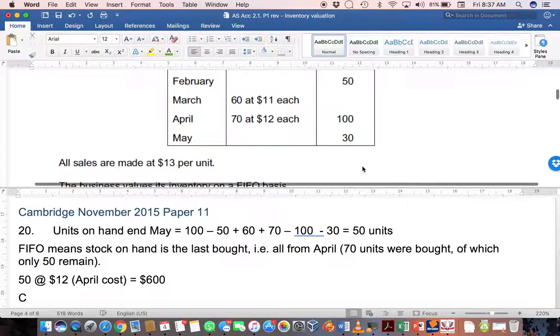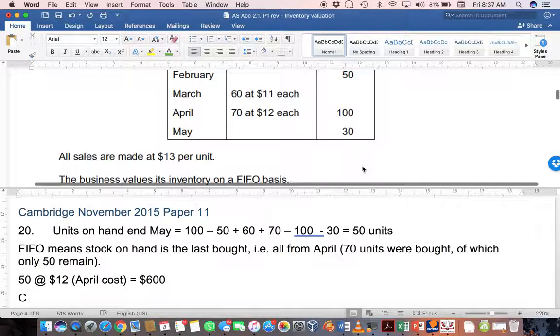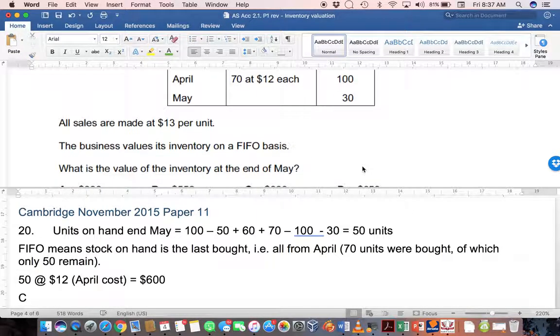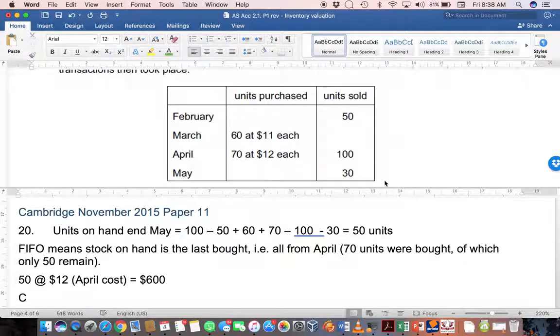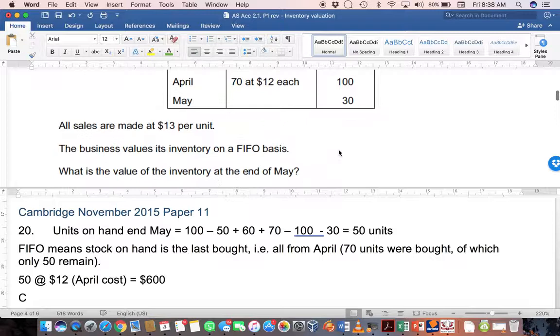All sales are made at $13 per unit and the business values inventory on a FIFO basis. The question is what is the value of inventory at the end of May? If you're looking at the value of inventory, you can ignore your sales. The selling price is completely irrelevant - you're only looking at the cost. FIFO says whatever you had first would have been sold first and you're looking for your end value. So the value of stock at the end would come first from your April purchases, then from your March purchases, and if you hadn't sold very much, then from your opening stock.